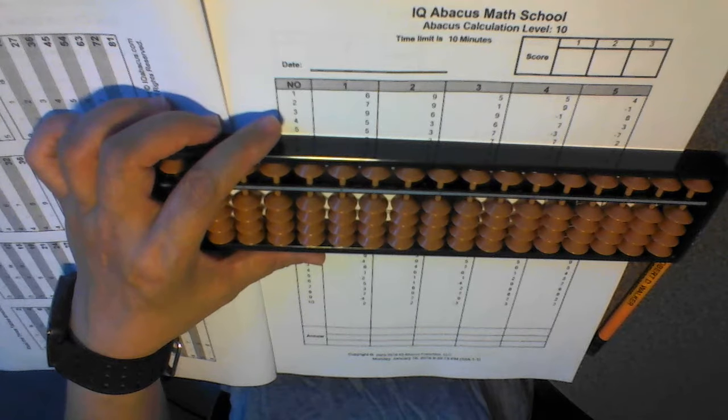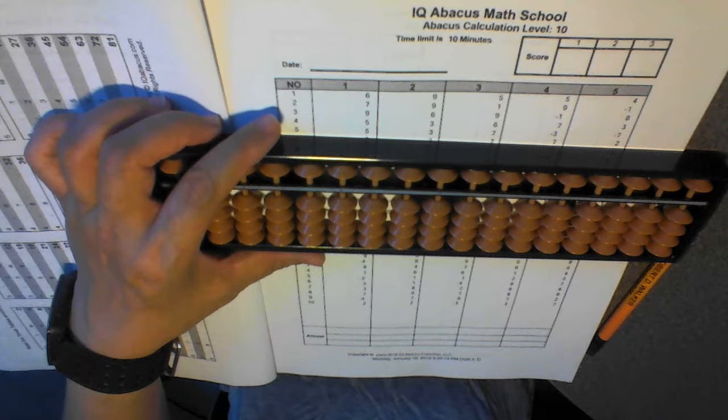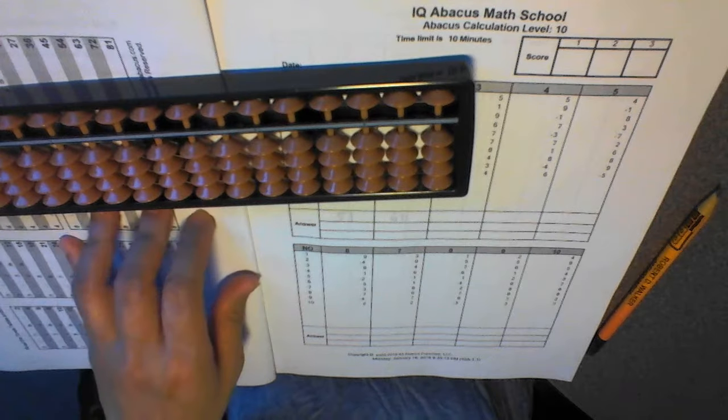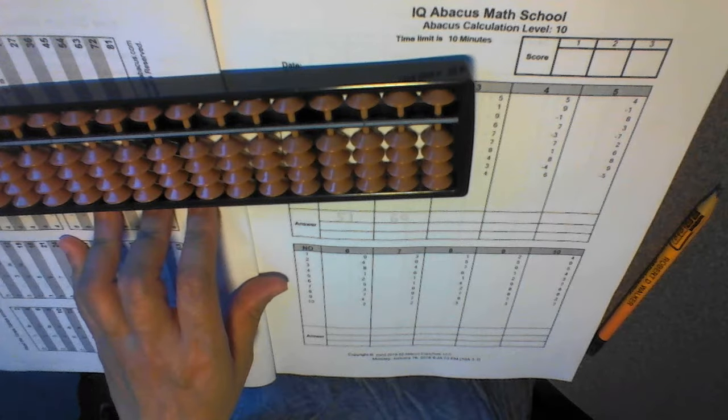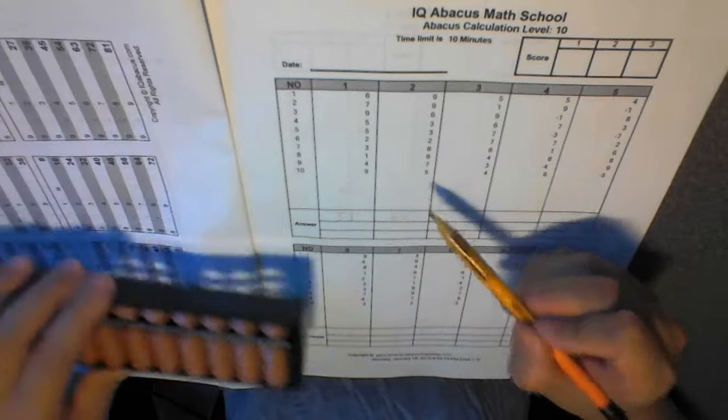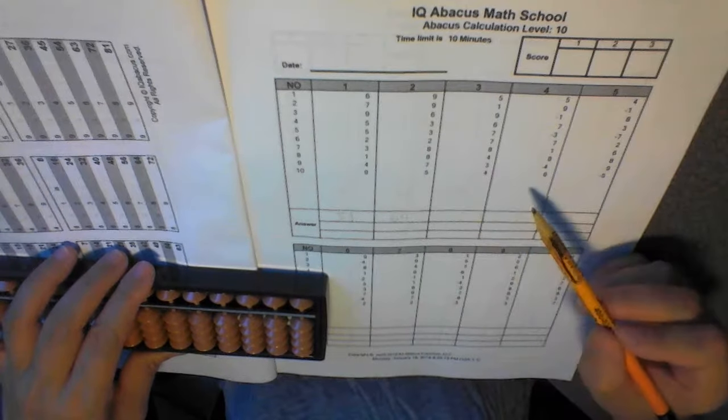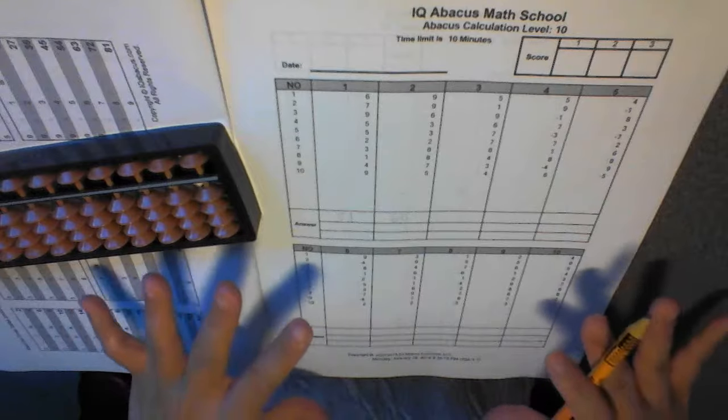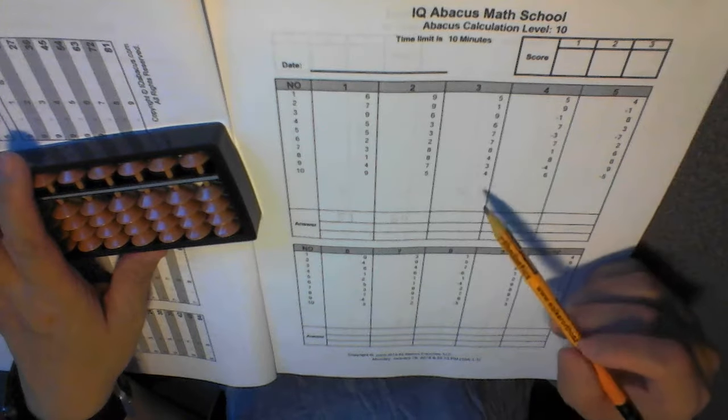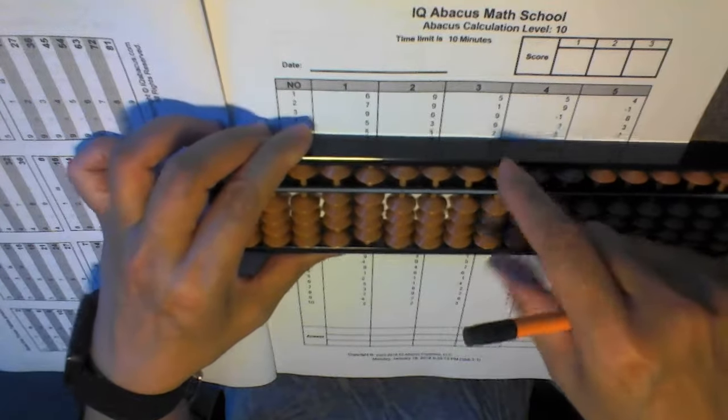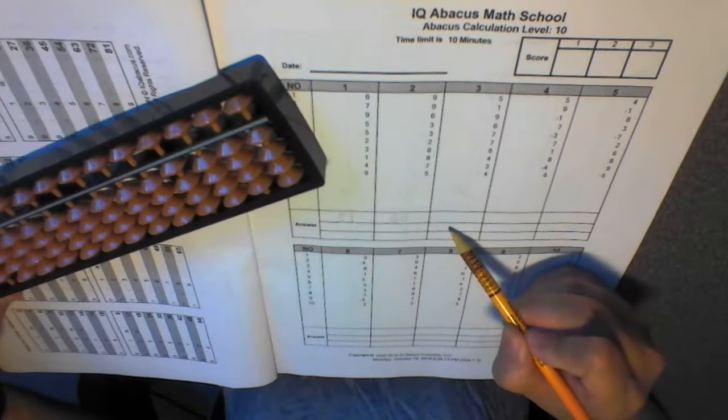Once you finish that, you can log in to iqabacus.com. Then click on answer submission link. Follow the instruction to enter your answers on the computer. And then the system will check the answers for you. You will make the check mark. If it's right, just make a check mark. If it's wrong, then make an x. And then after you finish checking, then you will go through those questions that's not right and do it all over again. And then get a second answer.